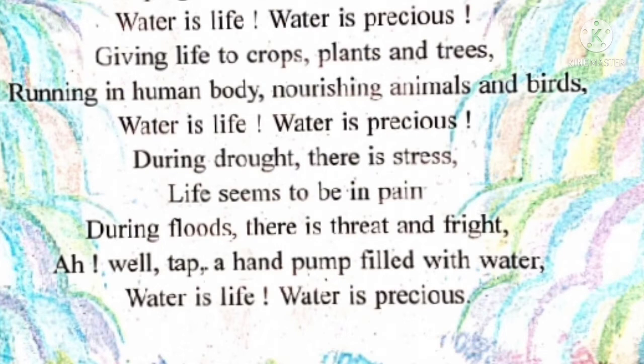During drought, there is stress. Drought means sukha padna. Jab baarish nahi aati, tab sukha pad jaata hai aur paani ki matra kam ho jaati hai. Jab rainfall hoti hai, land bahut saara paani ikkatha kar leti hai. But jab drought hoti hai, jab baarish kam ya nahi hoti, tab drought wali situation ho jaati hai. Hame paani nahi milta. And that time there is stress — we feel the pain. Life seems to be in pain, dard bhari ho jaati hai.